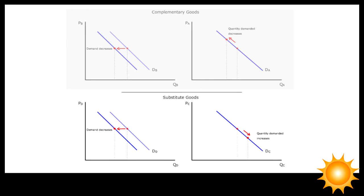Since goods C and D are substitutes, more good C will replace the use of good D. But the price of good D has not changed, so less good D would be bought only if the demand for good D decreases by shifting to the left.